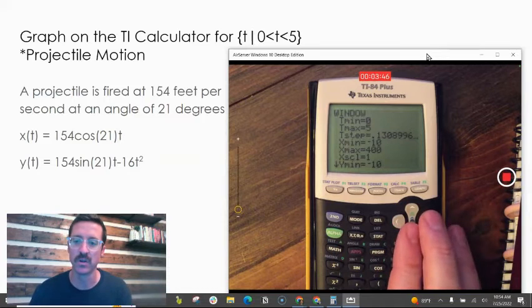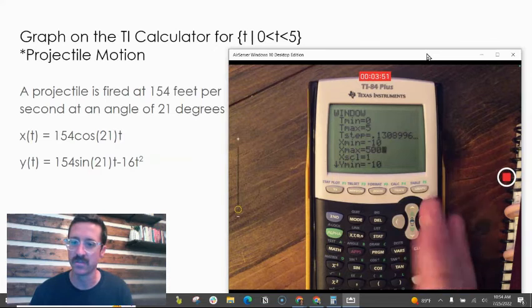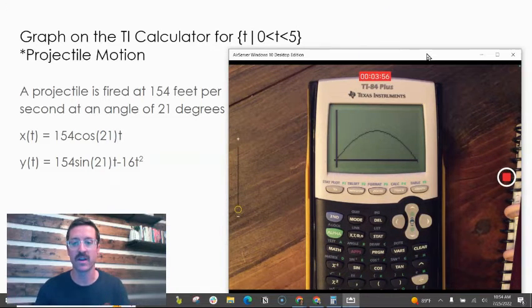It actually looks pretty good. I'm going to increase that x maximum a little bit more—looks like 400 wasn't enough. Let's see if 500 does it. It does, and that's a good look at our graph right there.